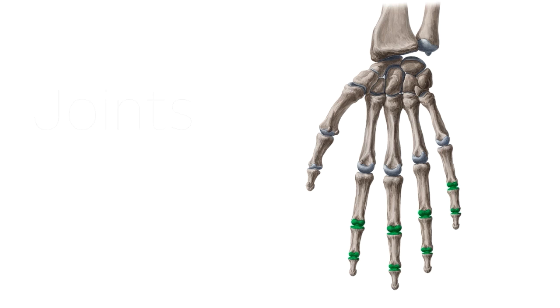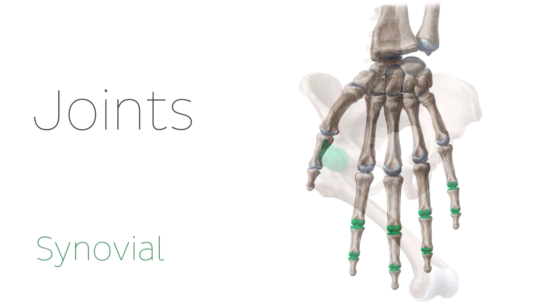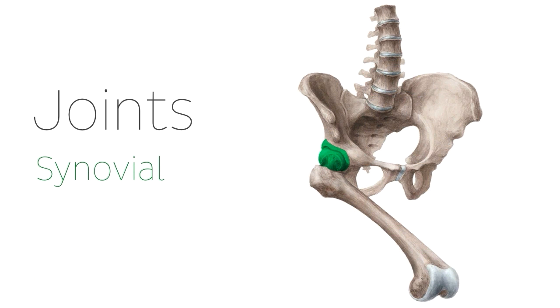When classifying joints according to the types of tissues holding the bones together, we can describe synovial joints, which are usually covered by a capsule and contain synovial fluid, allowing for large movements such as those of the hip joint on the right here.